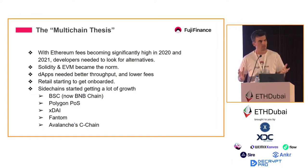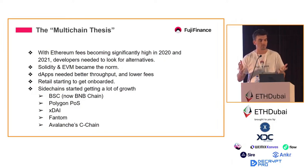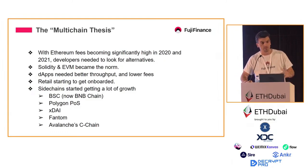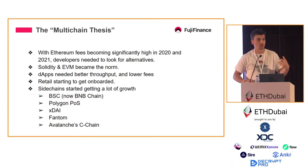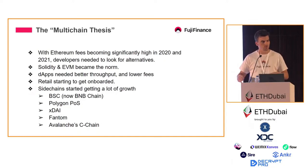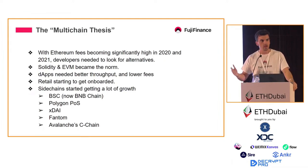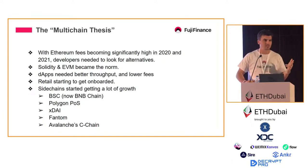This essentially evolved into what's known as the multi-chain thesis. Basically every single dApp developer realized that with all these fees getting absolutely insane, it would be crazy to stick only to Ethereum, because most likely some activity would decrease as it became too expensive for users. Developers needed to look for alternatives, and since Solidity and the EVM became the norm, a lot of other chains started to get activity. Some retail users were like, 'This is a little bit nicer — it's cheaper and faster.'